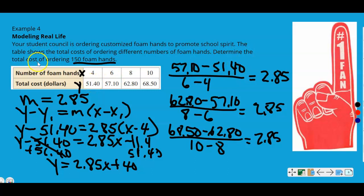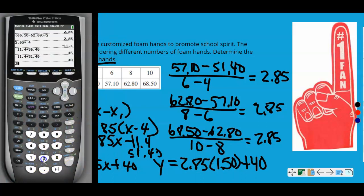Now we still have to determine the total cost of ordering 150 foam hands. So the number of foam hands is your X value. So we simply have to plug in 150 for X and solve for Y. So if we say Y equals 2.85 times 150 plus 40. That'll tell us how much 150 foam hands cost. So we've got 2.85 times 150 plus 40 equals 467.50.